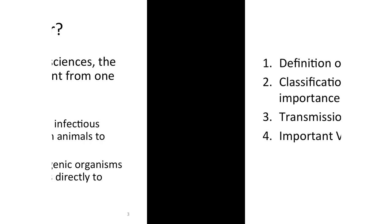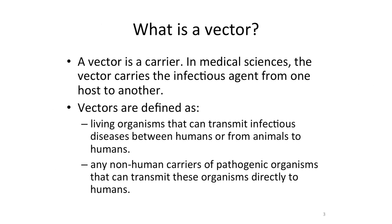We are going to start with the definition of a vector. What is a vector? A vector is basically a carrier — it's like a vehicle. In medical sciences, we define a vector as something which carries infections from one source to another. It can be from animals to humans or from humans to animals, and usually vectors are defined as living organisms that can transmit infectious diseases, or any non-human carrier of pathogens which transmits organisms directly to humans.